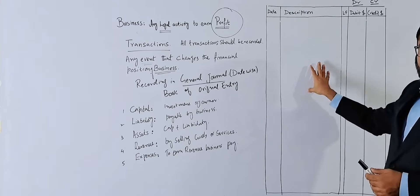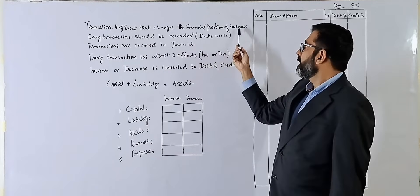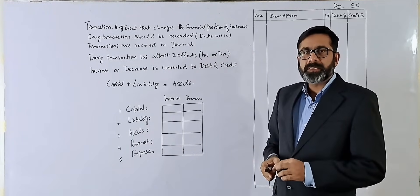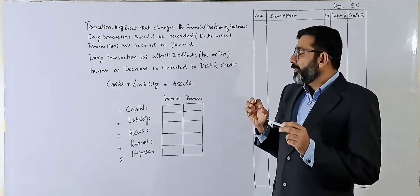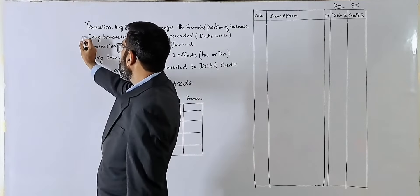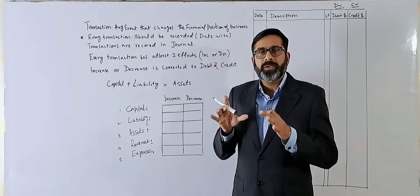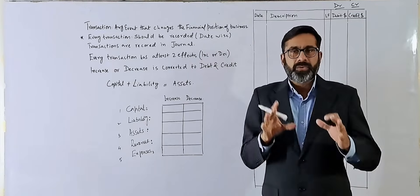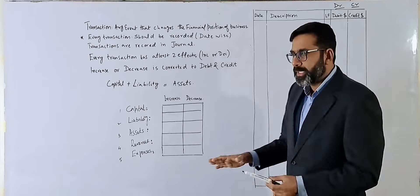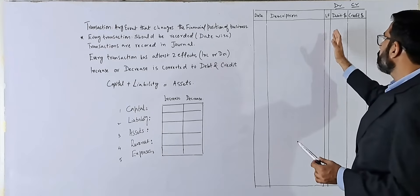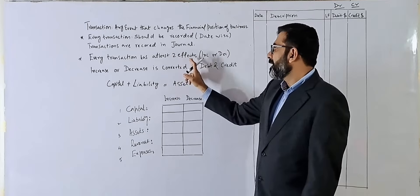Transactions are recorded date-wise in the general journal. The business may be a trading business, a production business, or a service business. The first important rule of recording is that every transaction should be recorded — any event happening in the business should be recorded. It should be recorded date-wise, meaning today's transaction must be recorded today. The next very important concept is that every transaction has at least two effects.